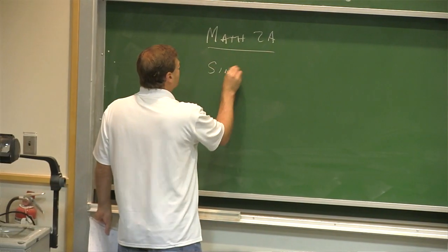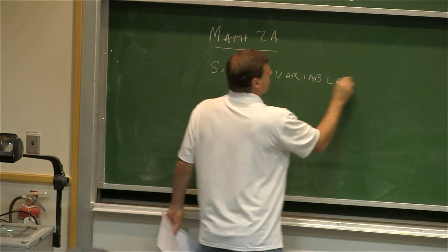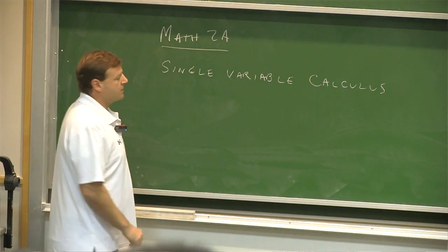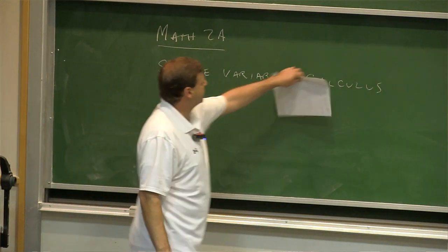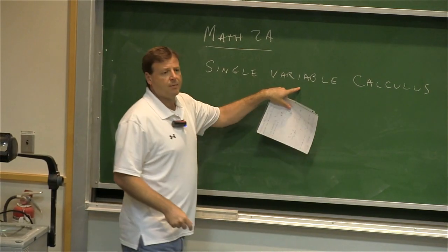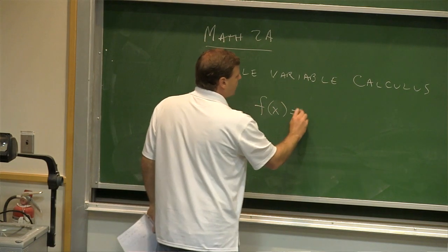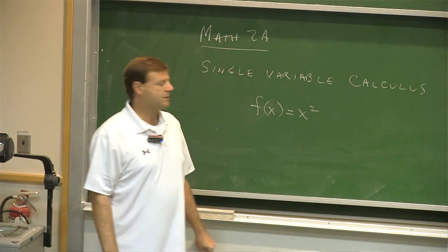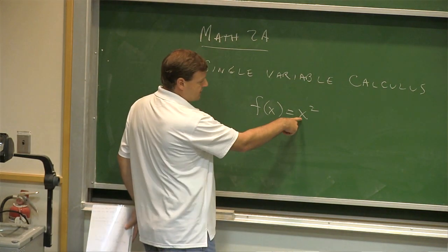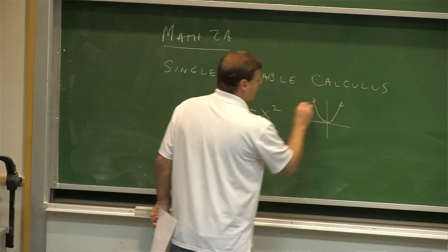So Math 2A — this is single variable. Before we even get into the calculus part, let's just deal with the single variable. The calculus is going to be derivatives, but let's start with functions. What's a typical function we have in calculus? There are several, and I want to make sure that when you see the symbolism, you have a picture that pops into your mind. This one's easy — that's the parabola.